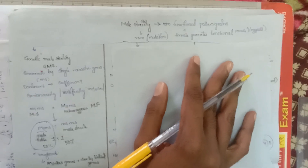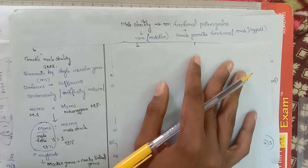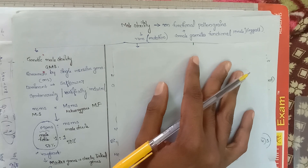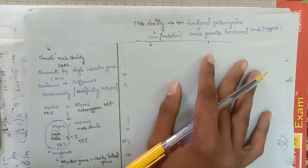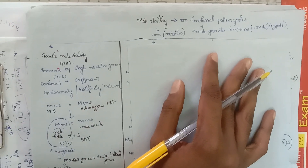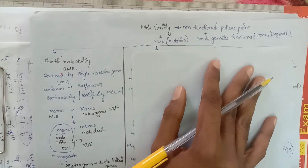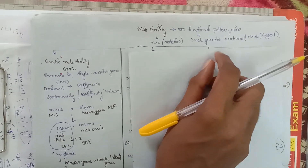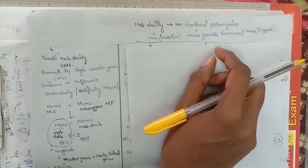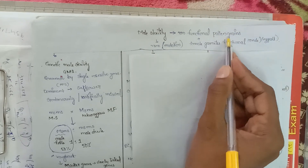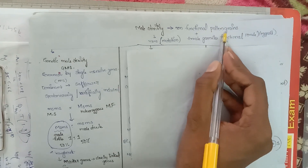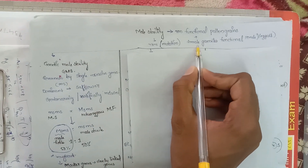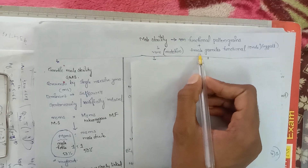Hi everyone, this is Vamsi Krishna, AGBSC 3rd year from Agricultural College, Jakityal. Today we are going to discuss about male sterility. Male sterility is nothing but non-production or non-functional pollen grains with functional female gametes. This is called male sterility.